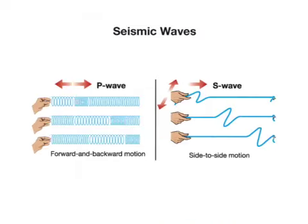These are two different seismic waves. P waves move with a forward and backward motion, and S waves move with a side-to-side motion. P waves are also faster than S waves and travel through any material. S waves can only travel through solids.